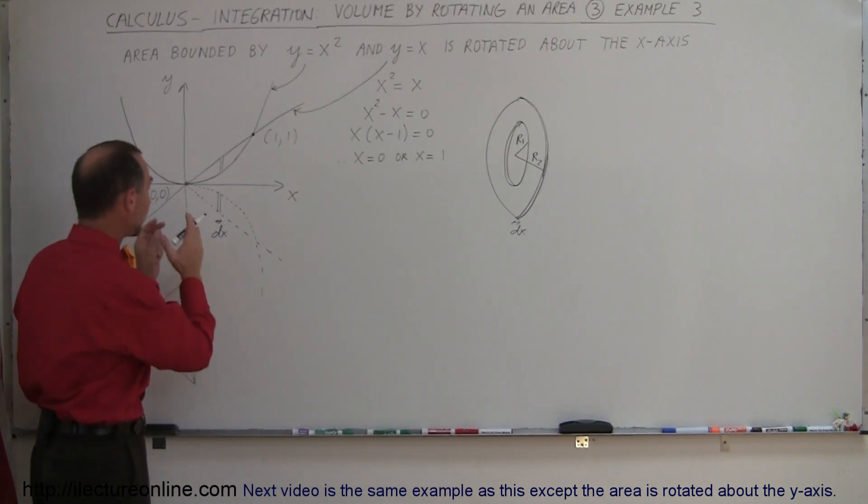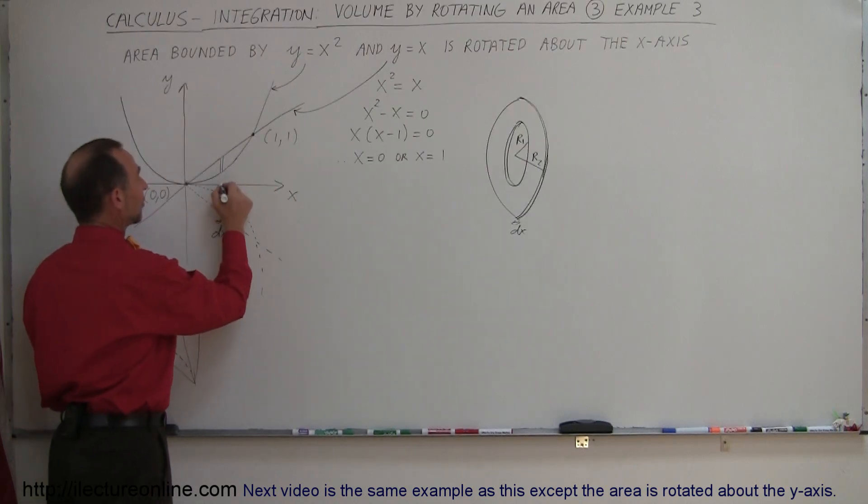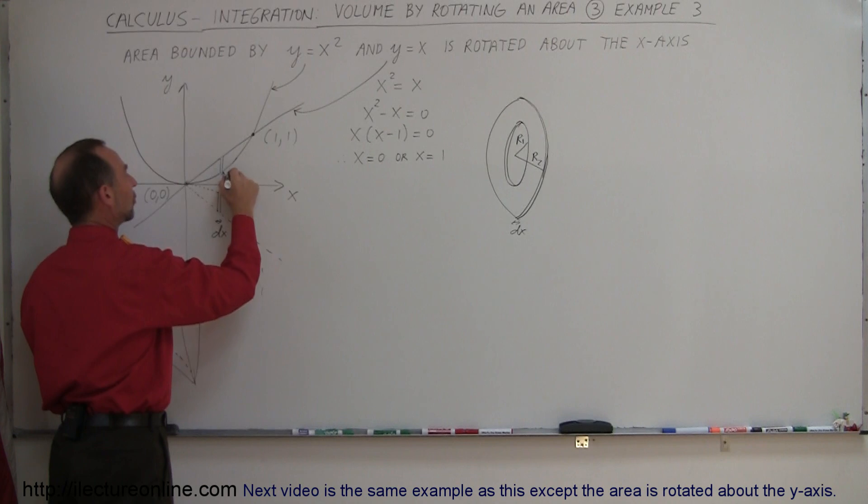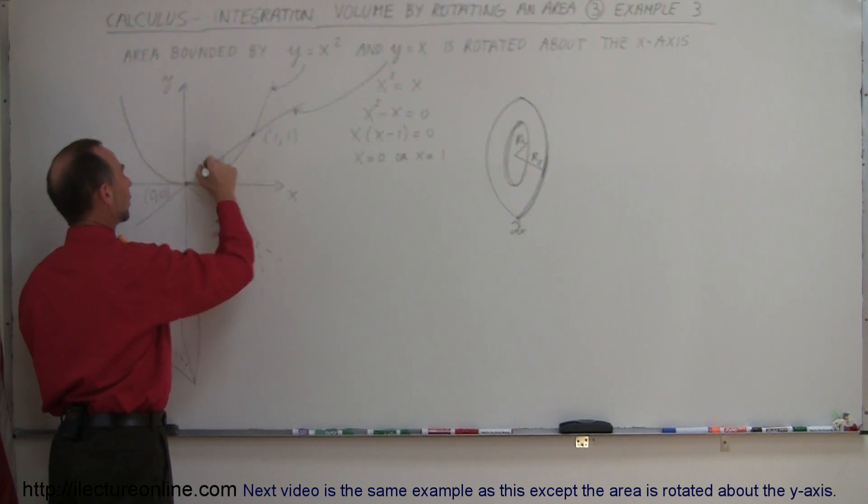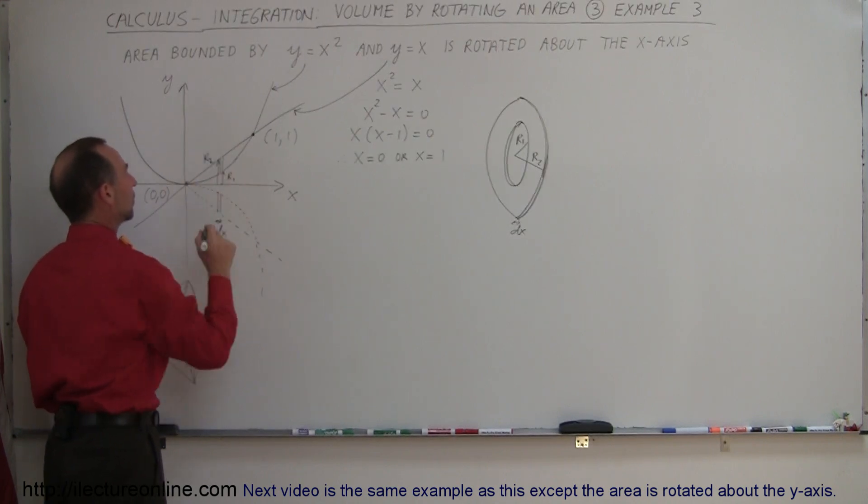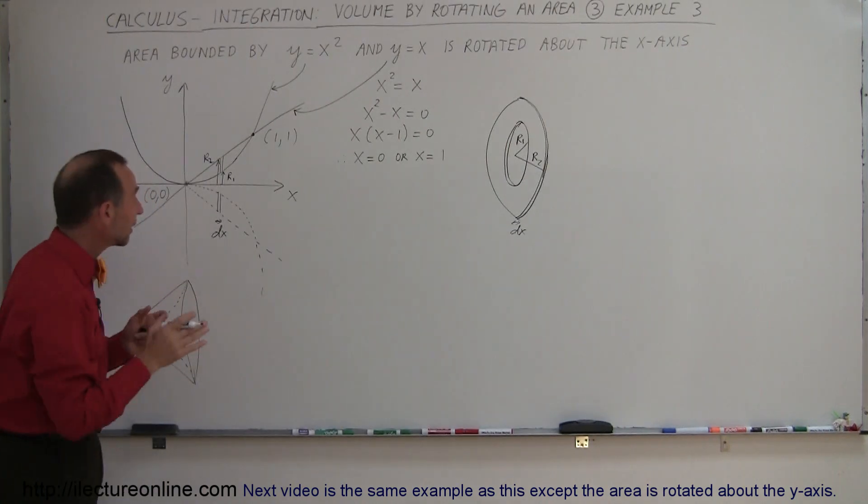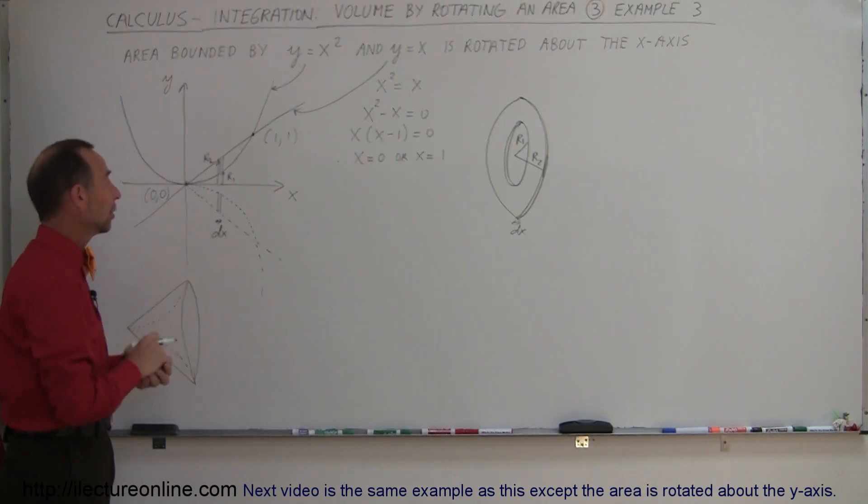How does that correspond to my drawing here? From the center, which is right here, I have an inner radius which goes to there, which is r1, and an outer radius which goes to there, which is r2. So now we have to determine what those inner and outer radii are in terms of x and y.